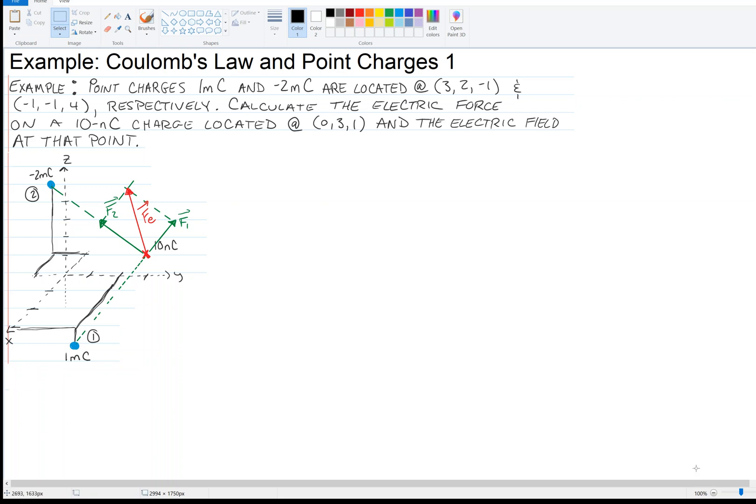Okay, this is an example of Coulomb's Law. So suppose two point charges of 1 millicoulomb and negative 2 millicoulombs are located at (3, 2, -1) and (-1, -1, 4) respectively. Calculate the electric force on a 10 nanocoulomb charge located at (0, 3, 1) and the electric field at that point.